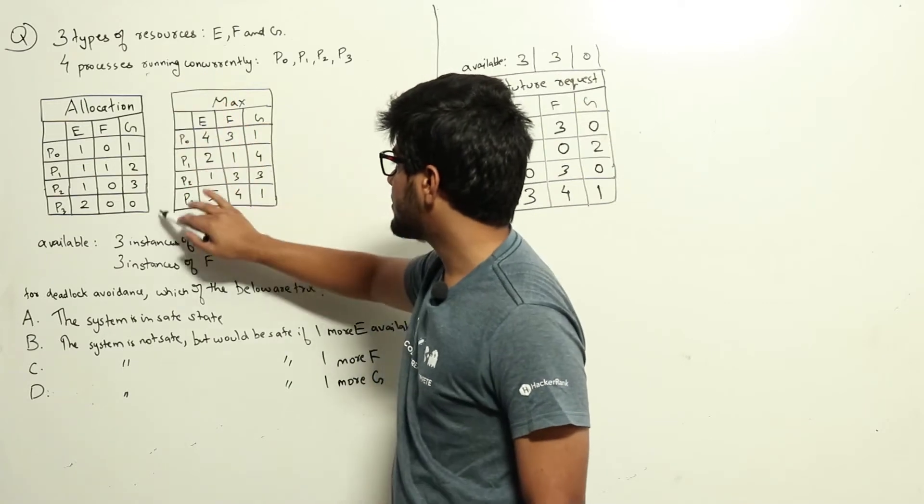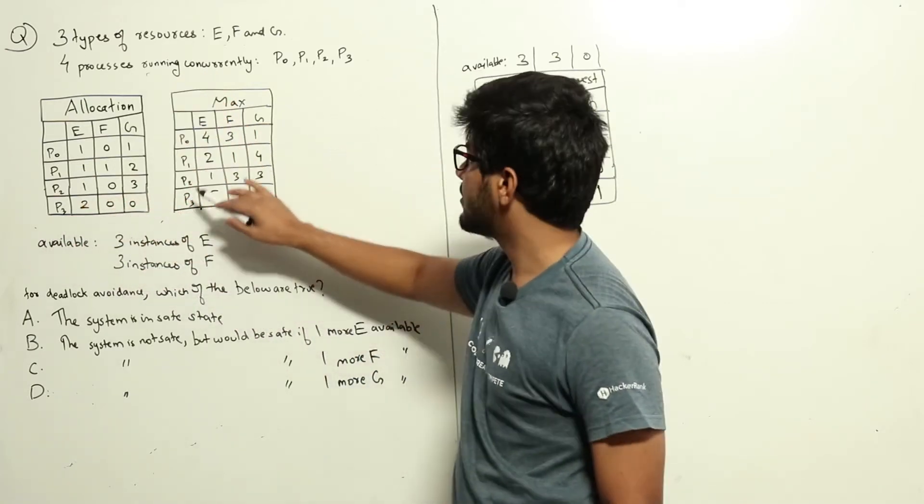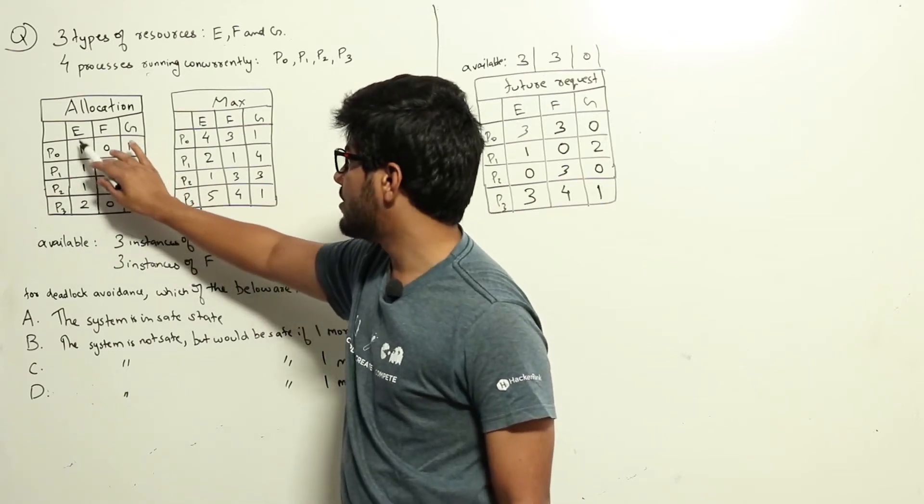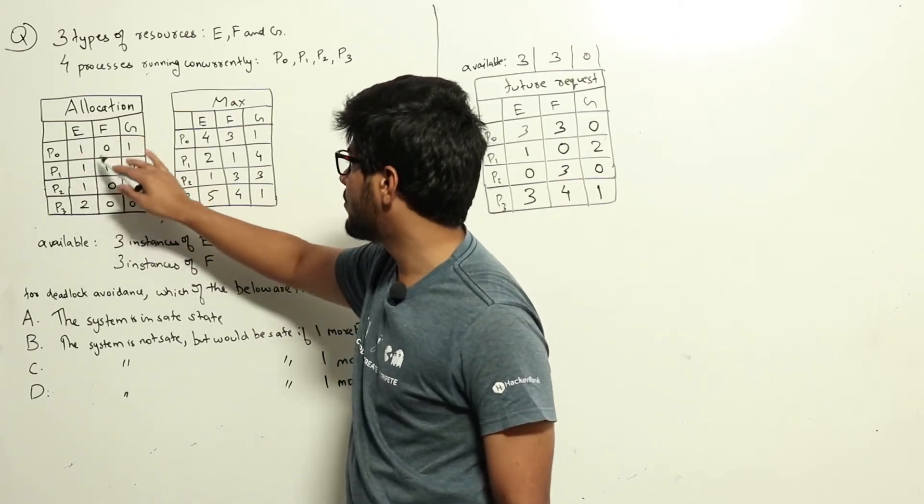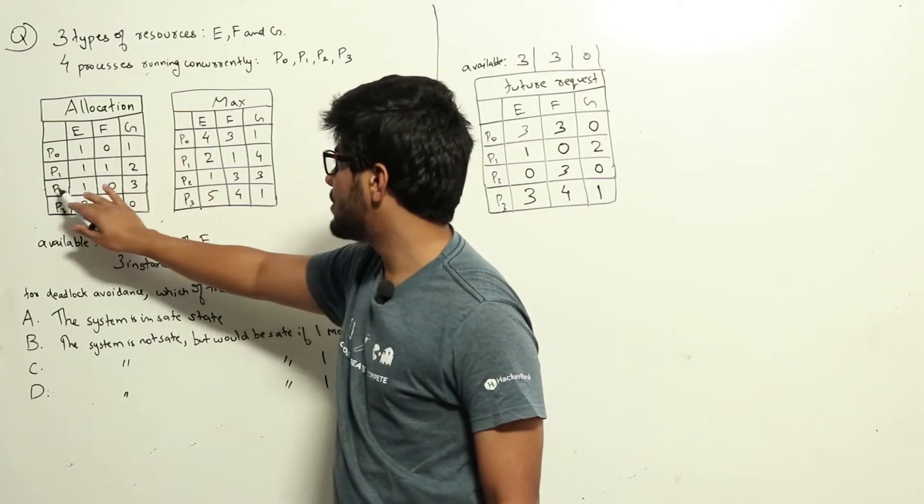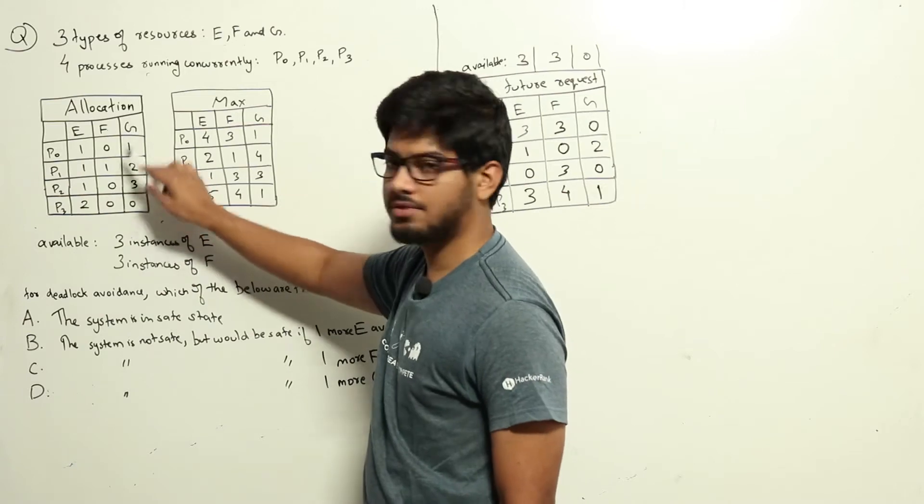This is the matrix for resource allocation, current allocation. P0 has been allocated one resource of type E, zero resources of type F, and one resource of type G. P2 has been assigned three resources of type G, etc.